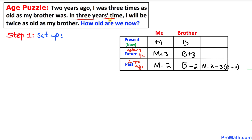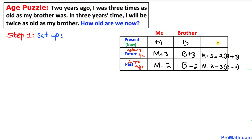Now let's focus on our second sentence: in three years time — that means we are dealing with the future tense, so it's the second row. I will be twice as old as my brother. I in this case is m plus three, so: m plus three equals twice — two times — my brother's age, which is b plus three.